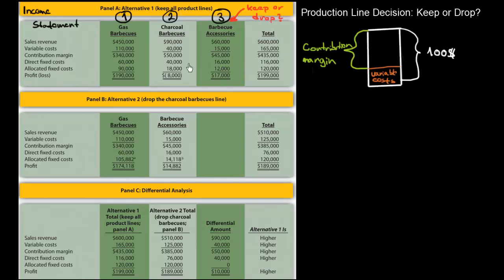Then we have some direct fixed costs. After that, there are allocated fixed costs — this is a tricky concept. Looking at the numbers: there are 90,000 here, 18,000 here, and 12,000 here, which all together adds up to 120,000.